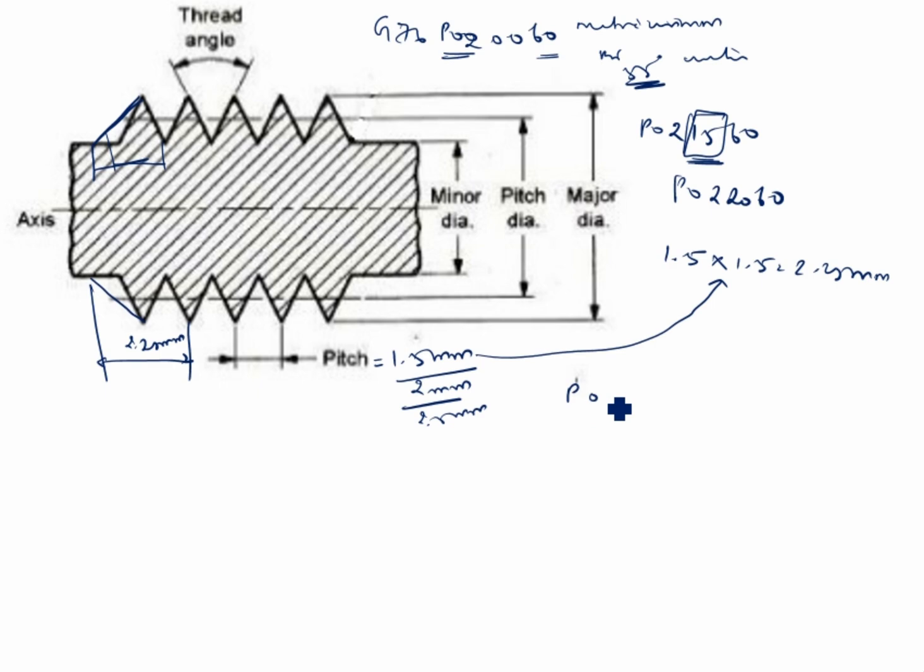We will take P02 15 60, pitch value equal to 1.5. Now if we take the same pitch value, 2 into 1.5 equals 3 mm. So this value is 3 mm.